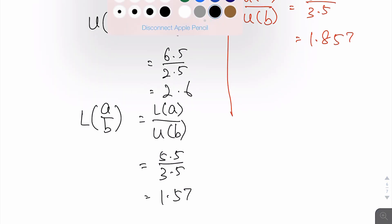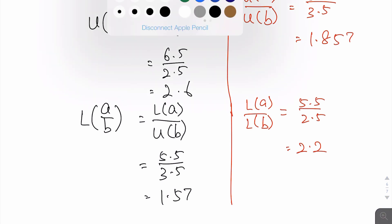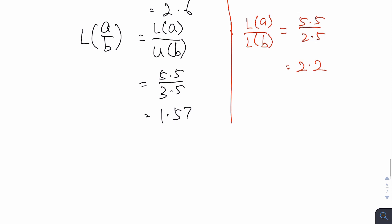I should explain why we divide by the upper bound. If you were to divide by the lower bound of b, you would get 2.2, and clearly 2.2 is not as small as 1.57. Because of this, we divide by the upper bound of b. So to write down the answer as a statement: a over b lies between 1.57 and 2.60.